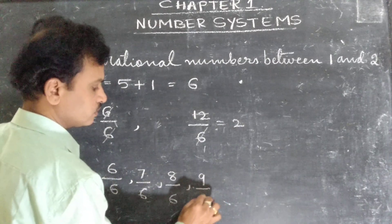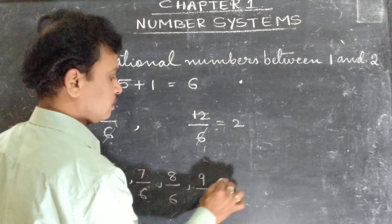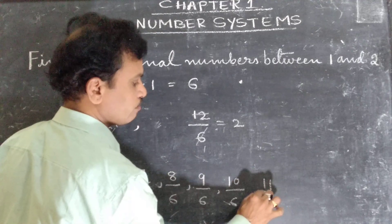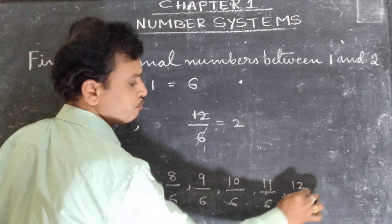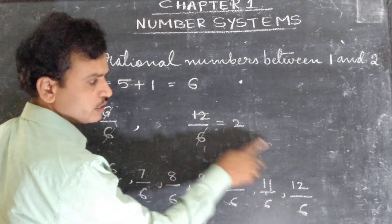Next after 8, 9. The denominator number should be the same. Then 10 by 6, 11 by 6. Next 12 by 6. What is the answer? That is 2.